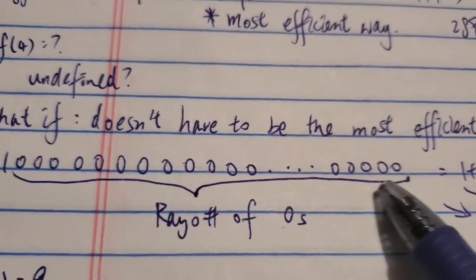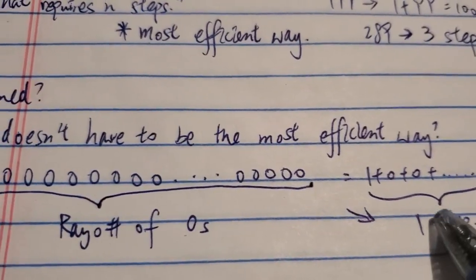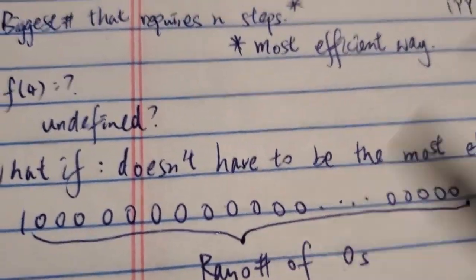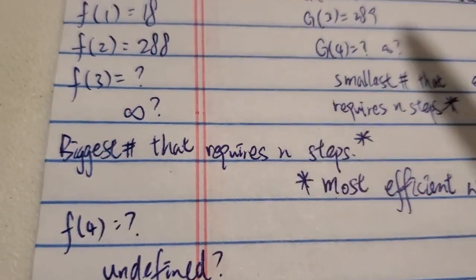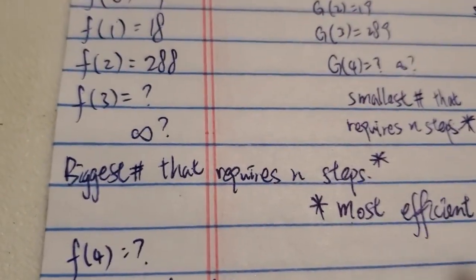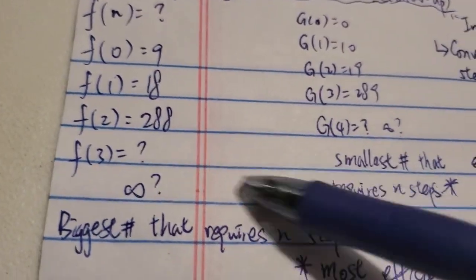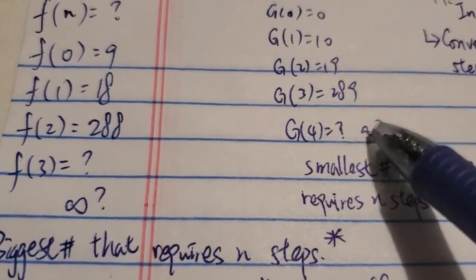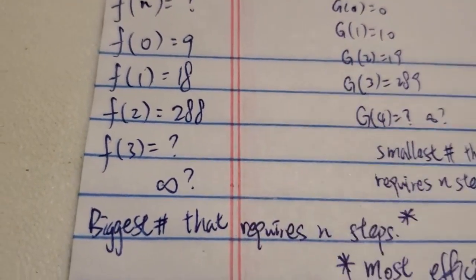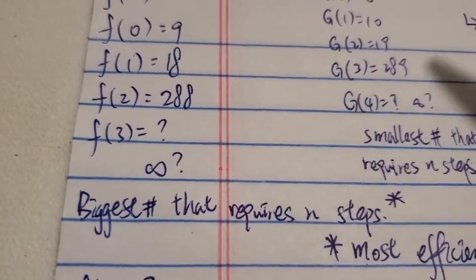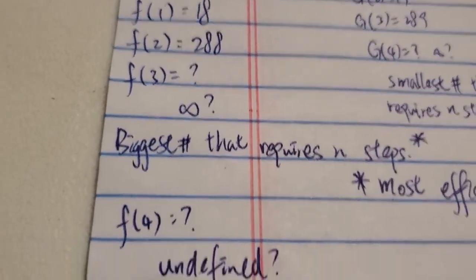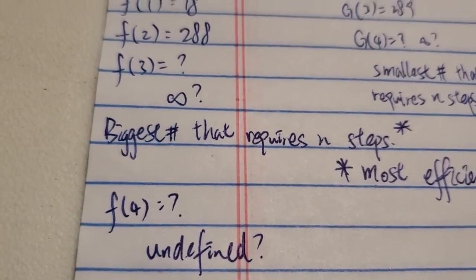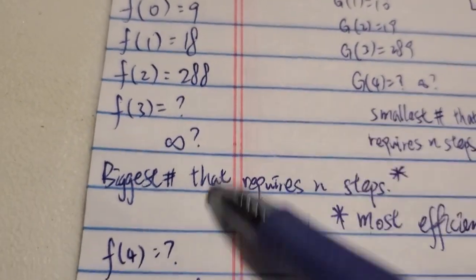Because one example would be that big number — though actually that number only requires one step, so it's not the correct example. You can have any other number bigger than that which requires three steps in the most efficient way. So would this be the fastest-growing function ever? Because f3 is kind of not undefined. However, using this definition, f4 is kind of undefined, because again no number requires four steps. So even if f3 is infinity, f4 is undefined.